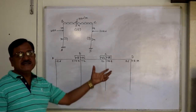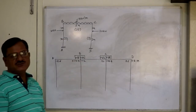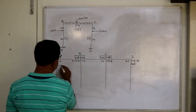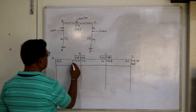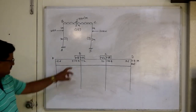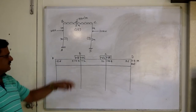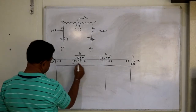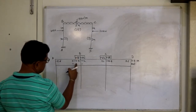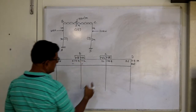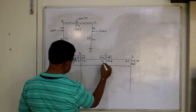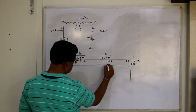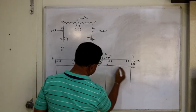Start balancing directly. The unbalanced moment at joint B is +14.4 − 12 = +2.4. Since unbalanced is positive, the balancing value is negative: multiply by 0.38 and write here, multiply by 0.62 and write there. Carry over to the next support — half value with the same sign. Then at joint C the unbalanced moment is negative, so balancing is positive.